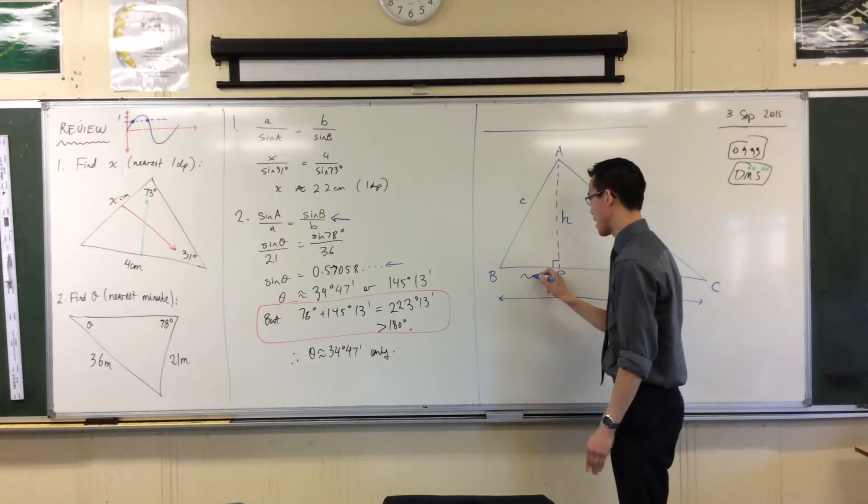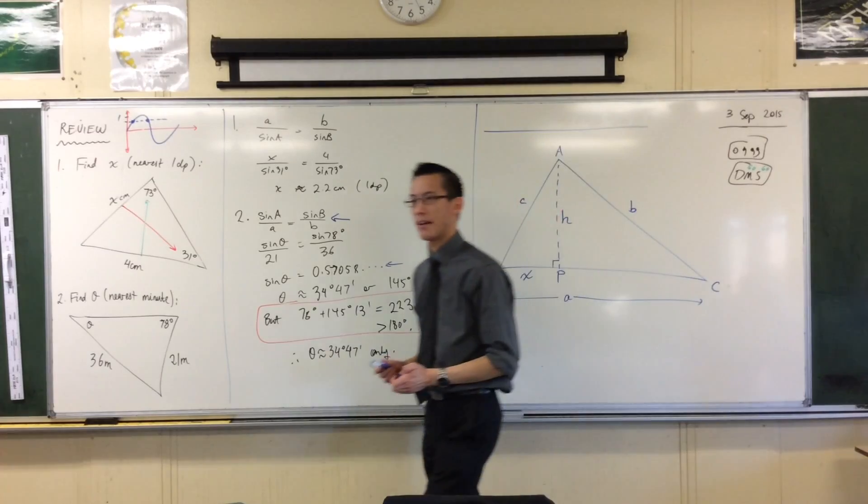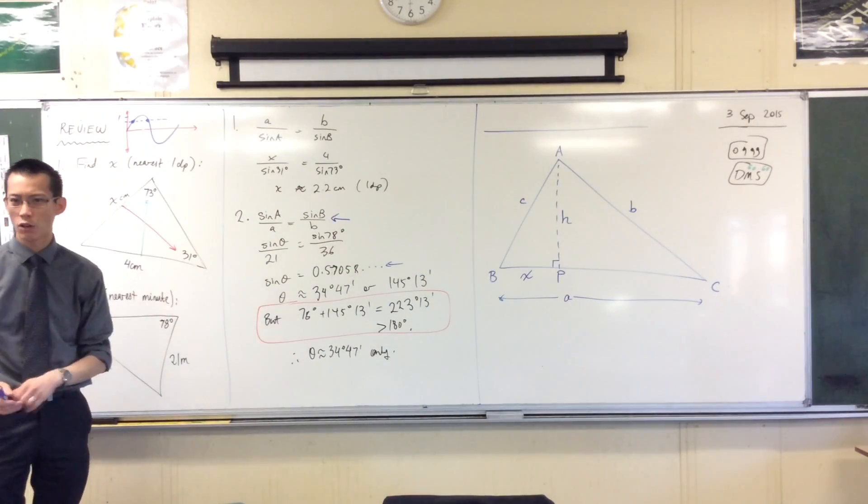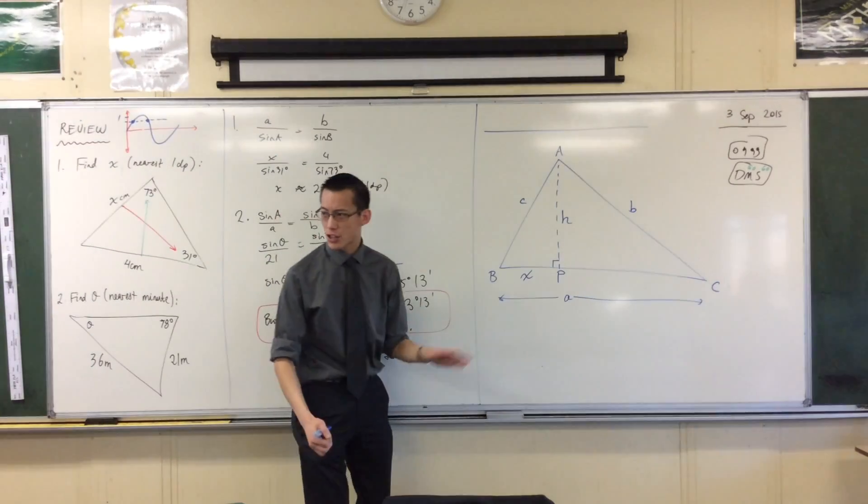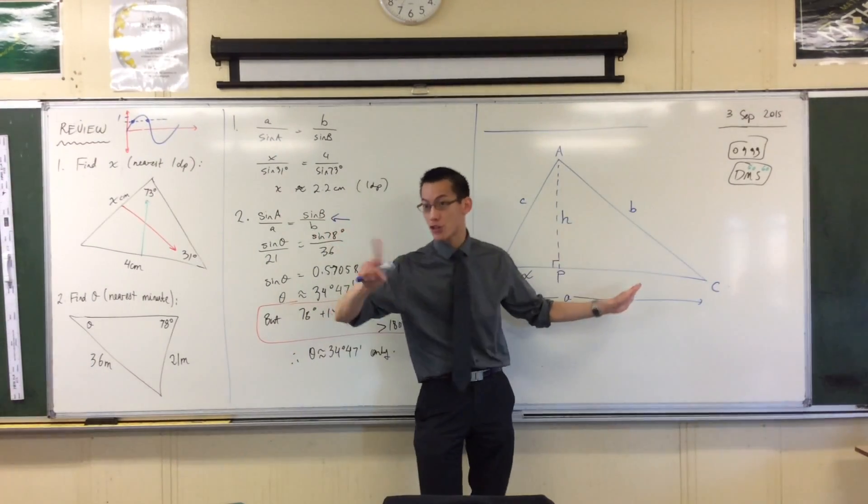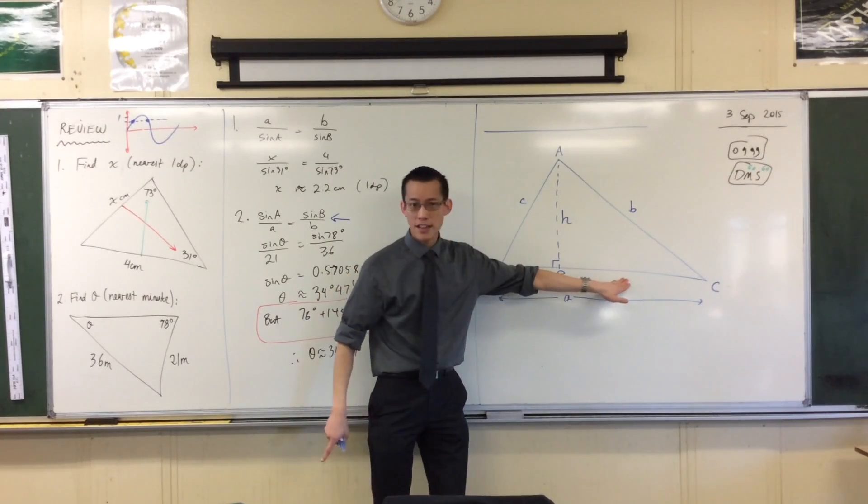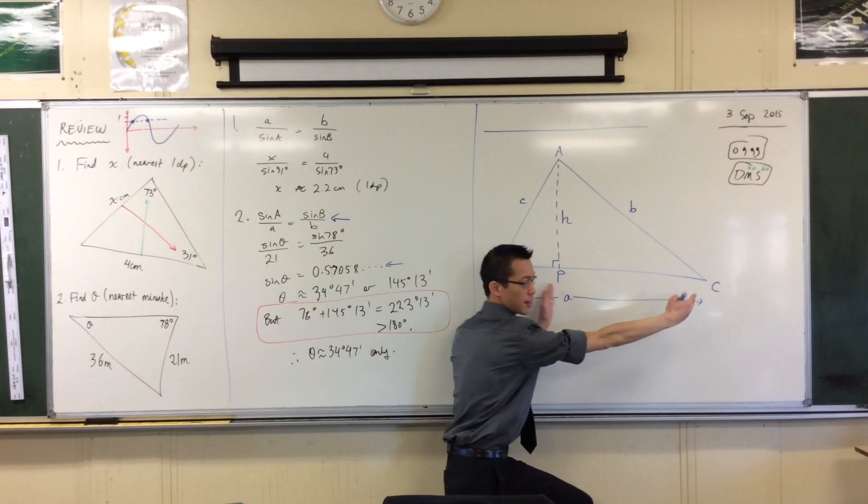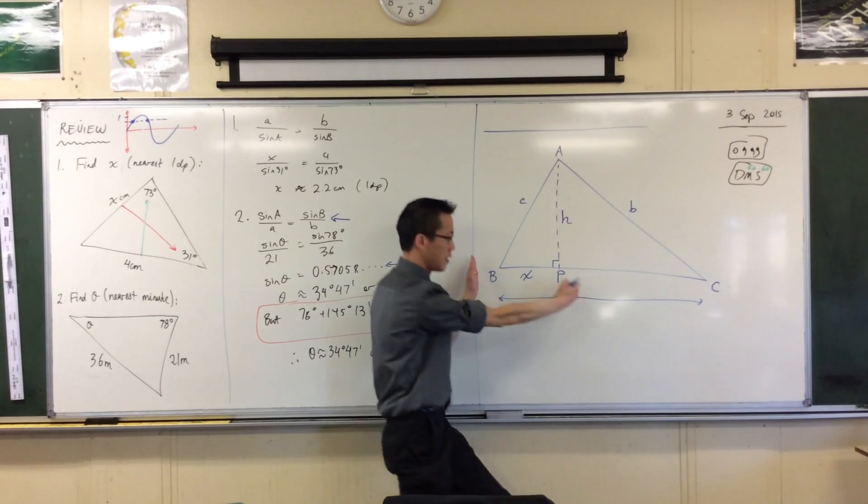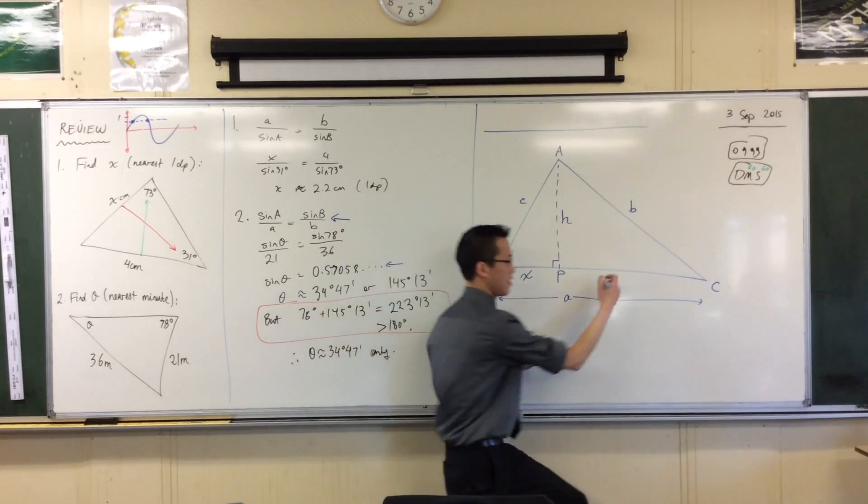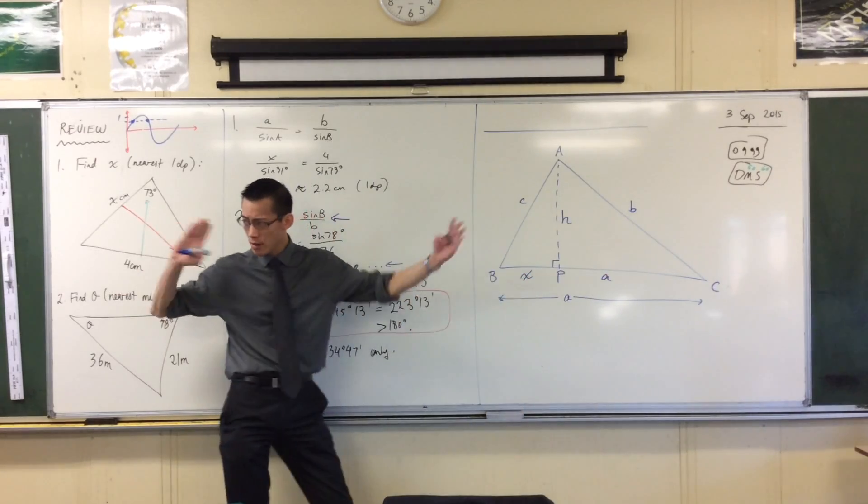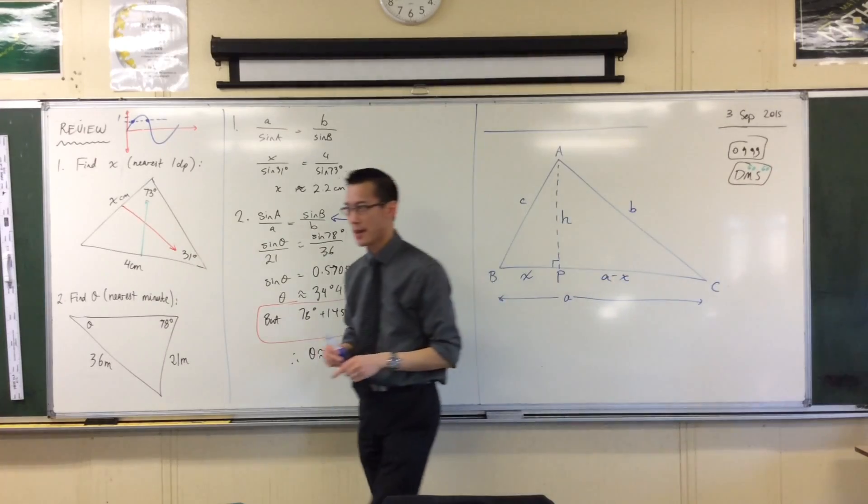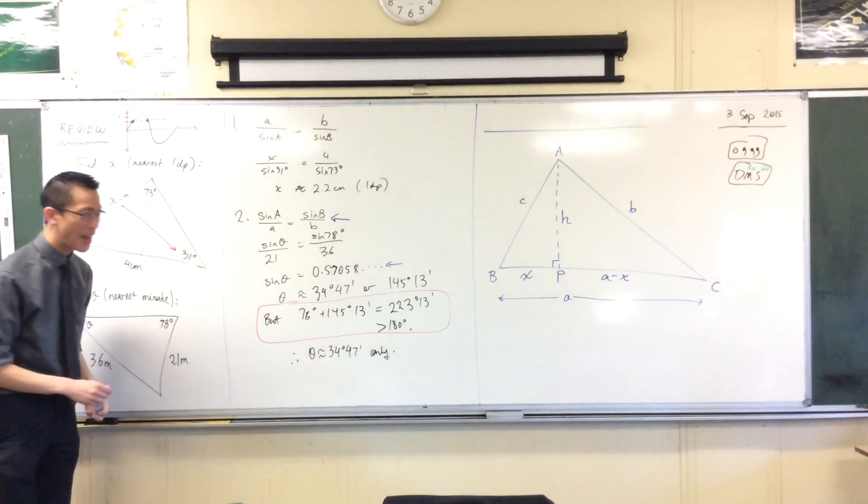I'm going to call bp, I'm going to call that length x, because I don't know what it is. If that little length is x, what's the leftover? What is pc? How long is that? Now, I could introduce another letter, but I can phrase it in terms of letters I already know. Yeah, it's this length is the whole length, a, take away this x that I just introduced. So I could say bc, or I could just use my lowercase a, and that'll be a take away x. Are you happy with that? A take away x.